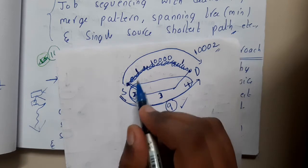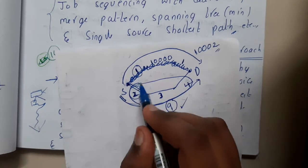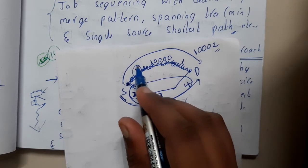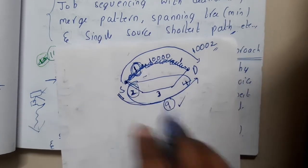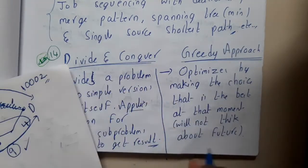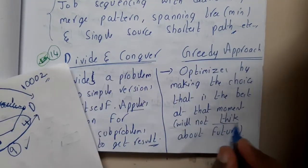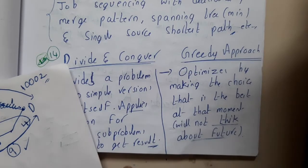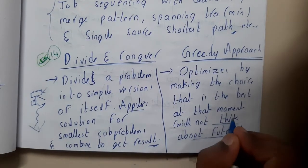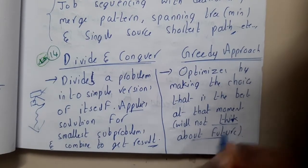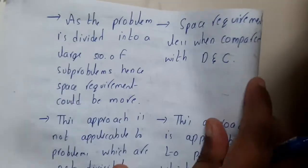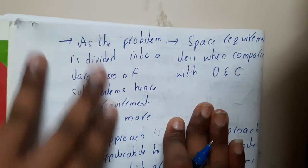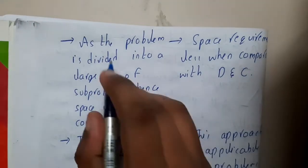Because the greedy algorithm is greedy about choosing the minimum cost, it will select the option with cost one. That is the reason why the greedy algorithm will always check locally only — it will not think about or check the future.